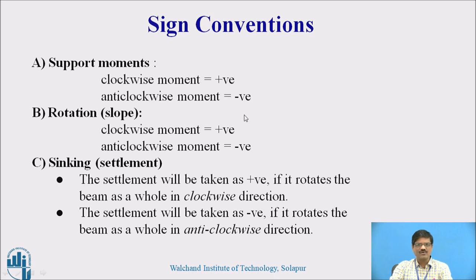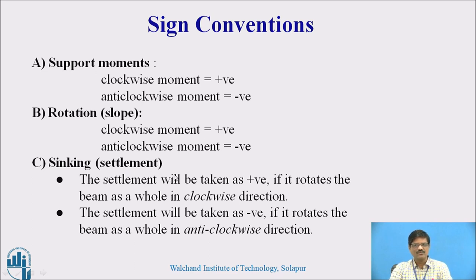These are the sign conventions followed in this topic. For moments: clockwise moment is considered positive and anti-clockwise moment is considered negative. The same applies to rotations or slopes: clockwise slope is positive and anti-clockwise is negative. For settlements, since we often encounter sinking of supports: the settlement is taken as positive if it rotates the beam as a whole in a clockwise direction, and negative if it rotates the beam anti-clockwise.